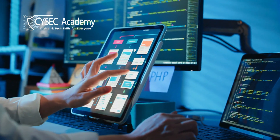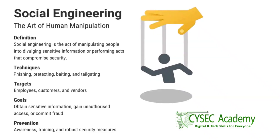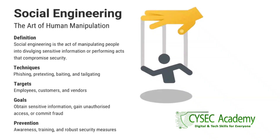Social engineering is the art of manipulating individuals into performing actions or divulging confidential information. Common social engineering tactics include: one, pretexting — creating a fabricated scenario to trick a victim into giving up information; two, baiting — offering something enticing; and three, quid pro quo — offering a benefit in exchange for information.